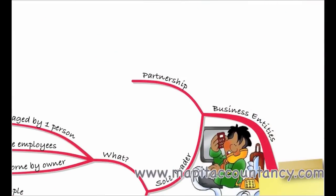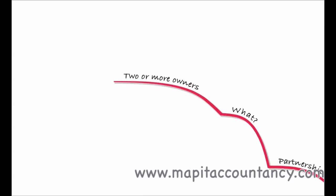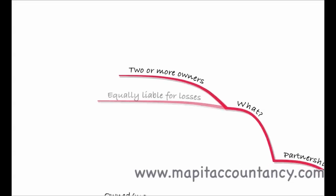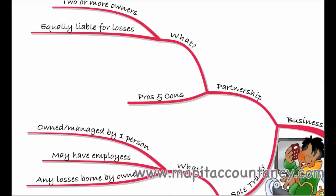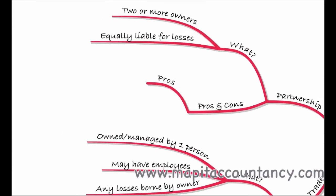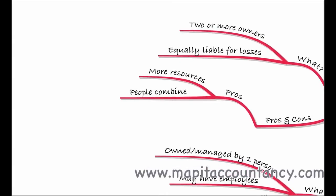Or perhaps you could go for a partnership. A partnership is quite similar to a sole trader, but here we have two or more owners. You could think of them as two sole traders who've got together and set up a business. They will be equally liable for the losses — so your personal losses will be limited to your share of what the business makes. On the plus side, you'll have more resources because you have a second partner, or perhaps other partners, within the business. Partners may also have different strengths which you can combine to make the business stronger.